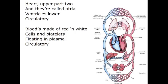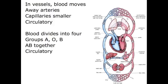Floating in plasma, circulatory. In your vessels blood's away, arteries have a letter score — circulatory — that divides into four groups. They all will be behaving together, circulatory.